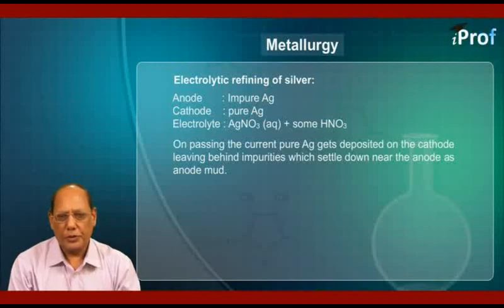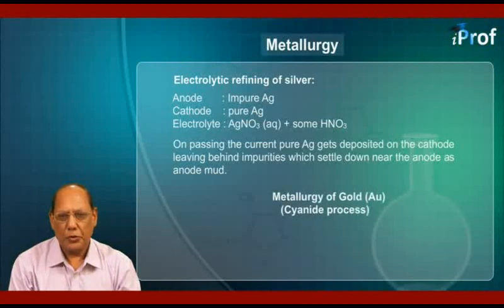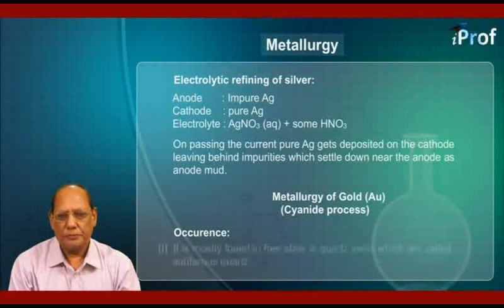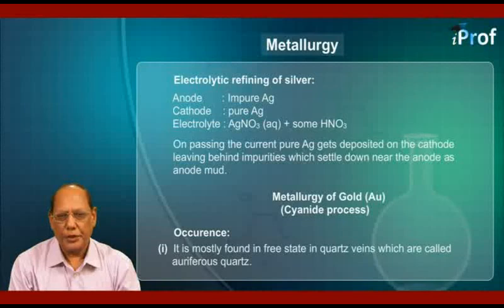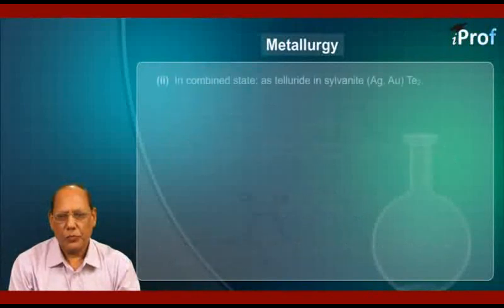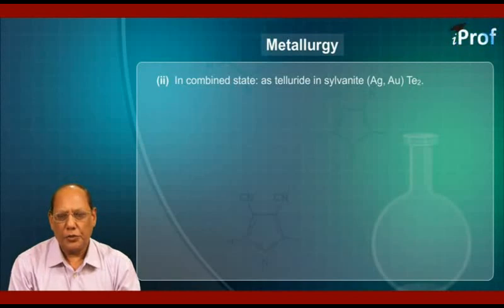Let us now discuss, parallel to this, the metallurgy of gold, which also involves the cyanide process. Occurrence: it is mostly found in free state in quartz veins, which are called auriferous quartz. Second, in combined state as tellurides in sylvanite (AgAuTe₂).